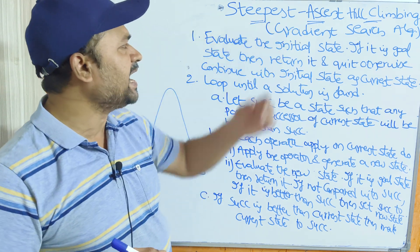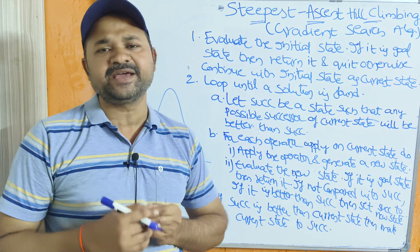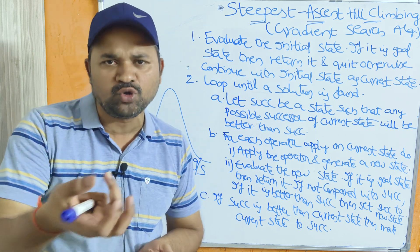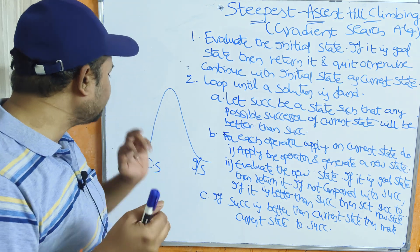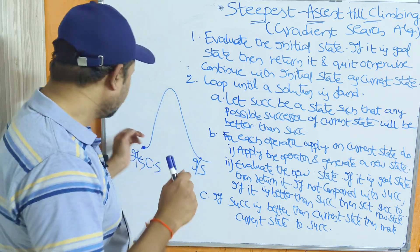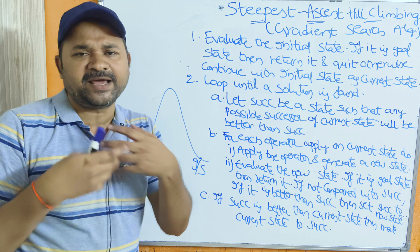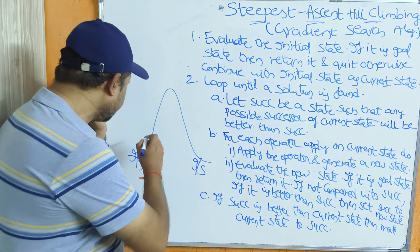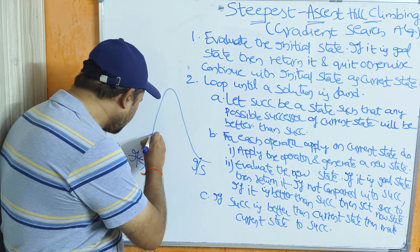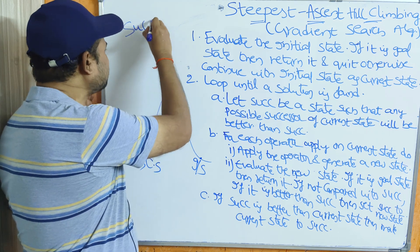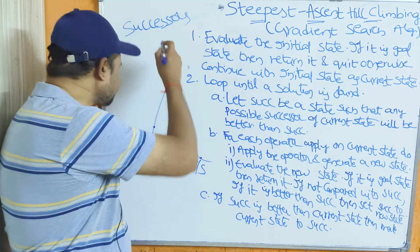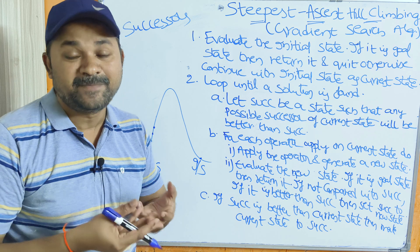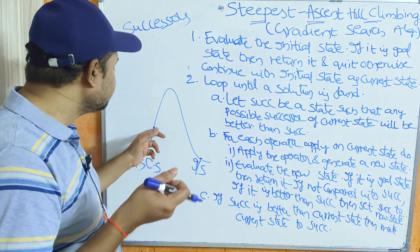The major difference between simple hill climbing and steepest ascent hill climbing is: in simple hill climbing, applying one operator on the current state gives only one next state. But here, we apply several operators or heuristic functions on the current state, and we get multiple next states — we call these states successors.